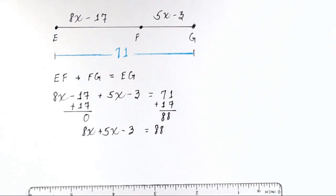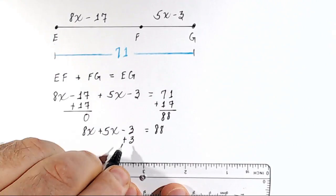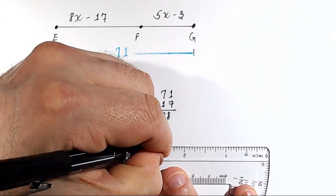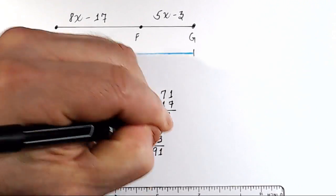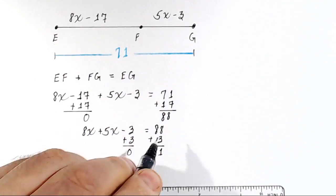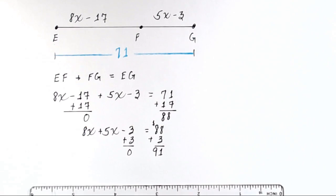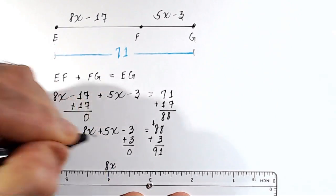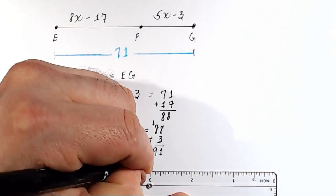Let's get rid of the minus 3 — we add 3 to both sides. On the left, negative 3 plus 3 is 0. On the right, 88 plus 3 is 91. So let's rewrite: on the left we just have 8X plus 5X equals 91.